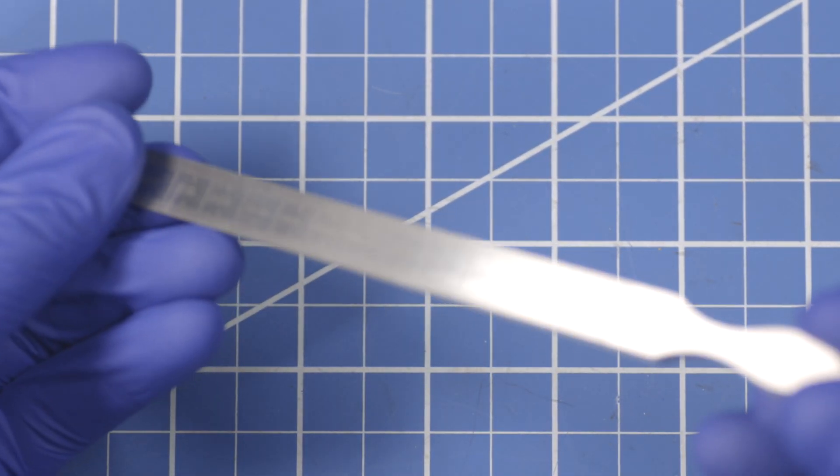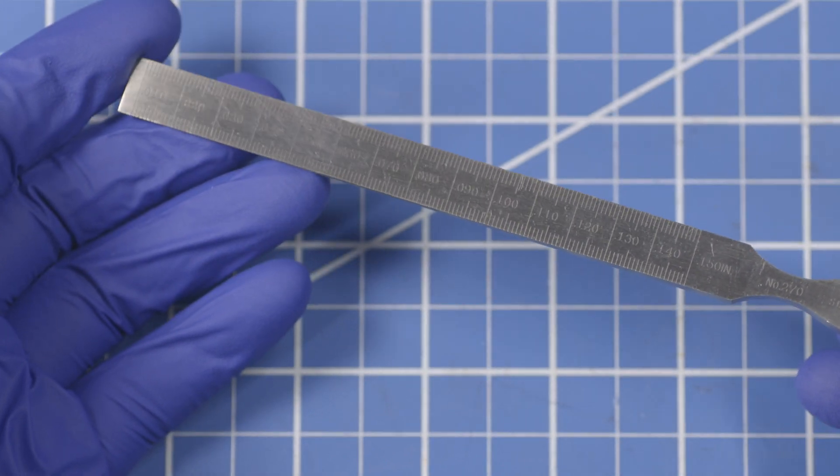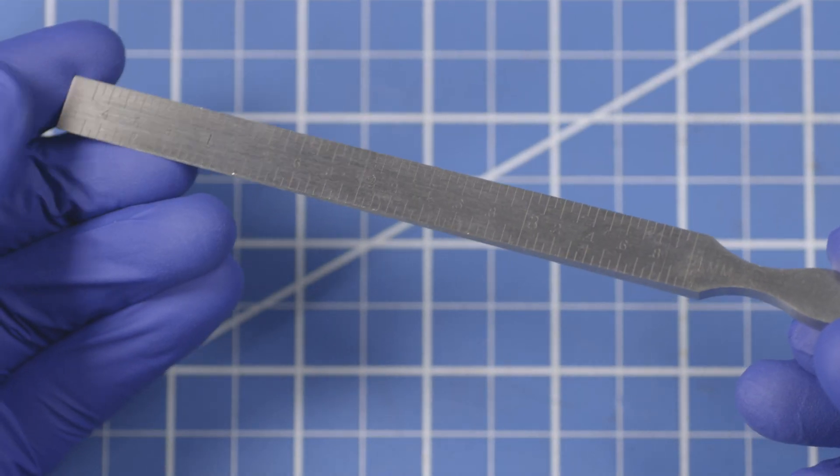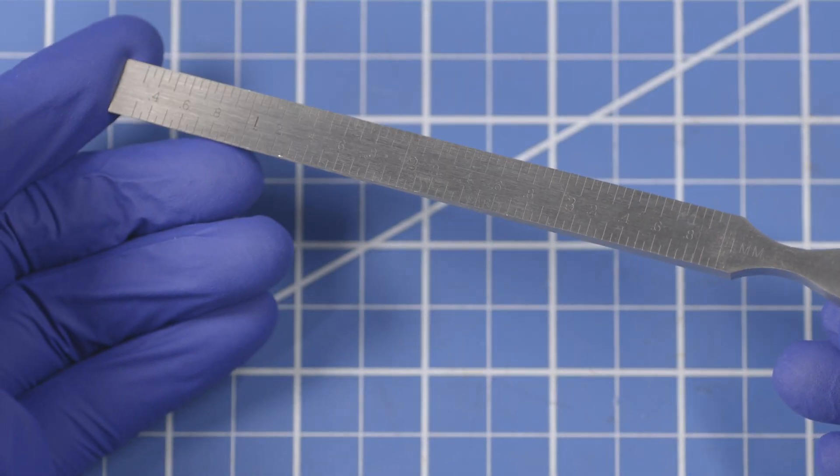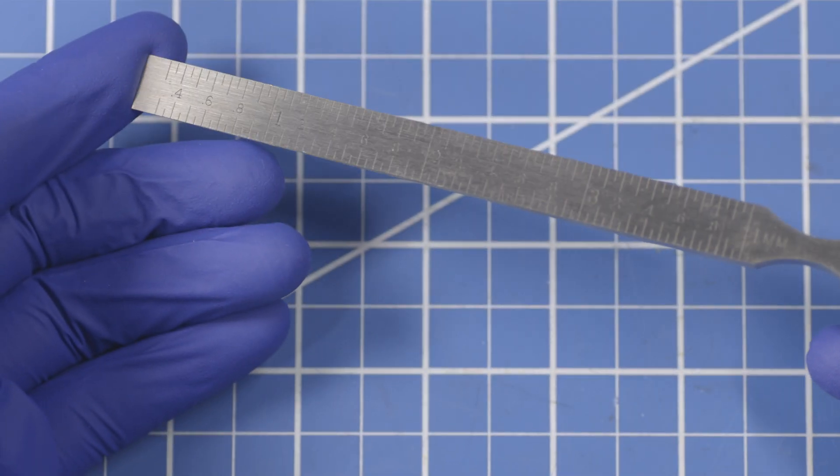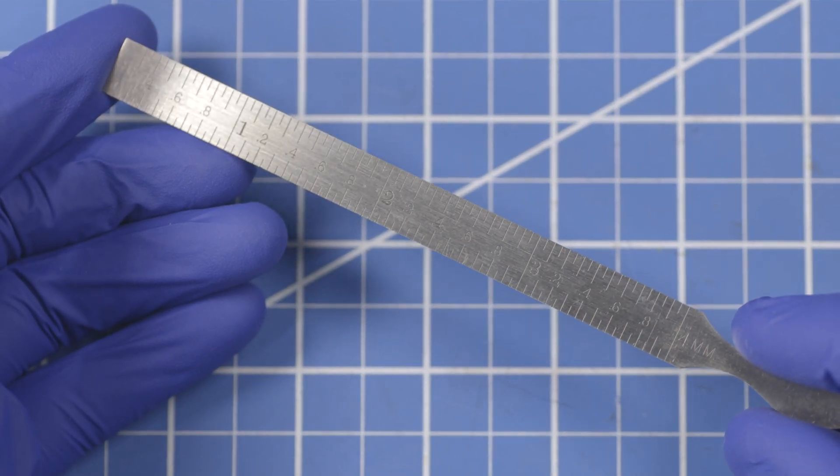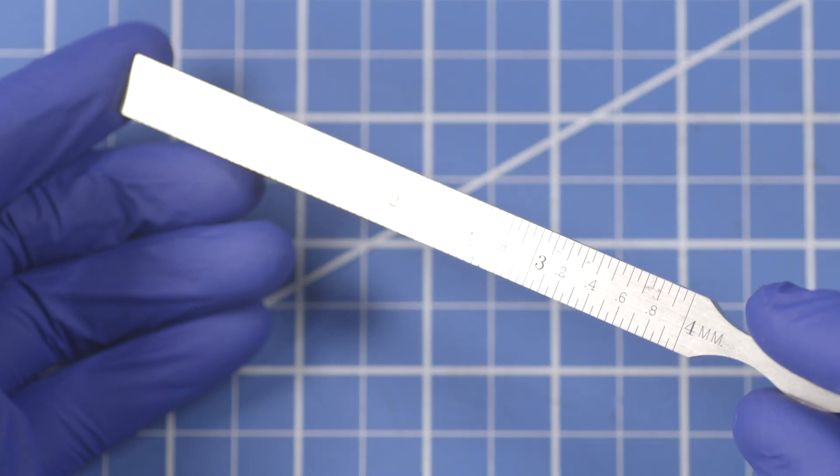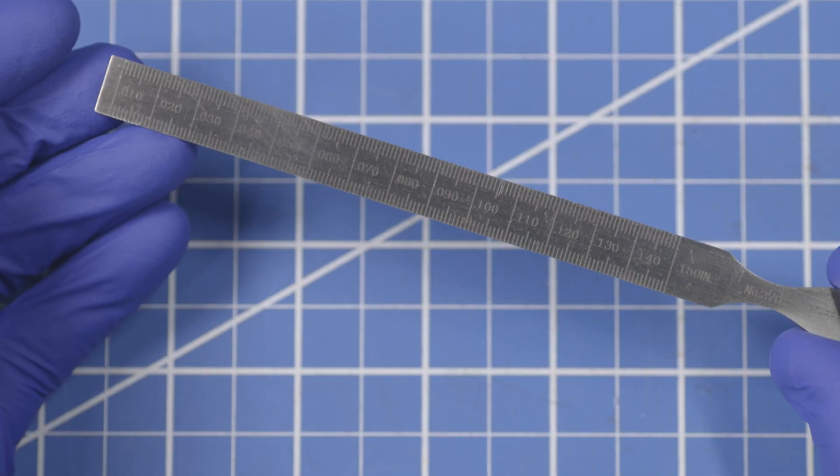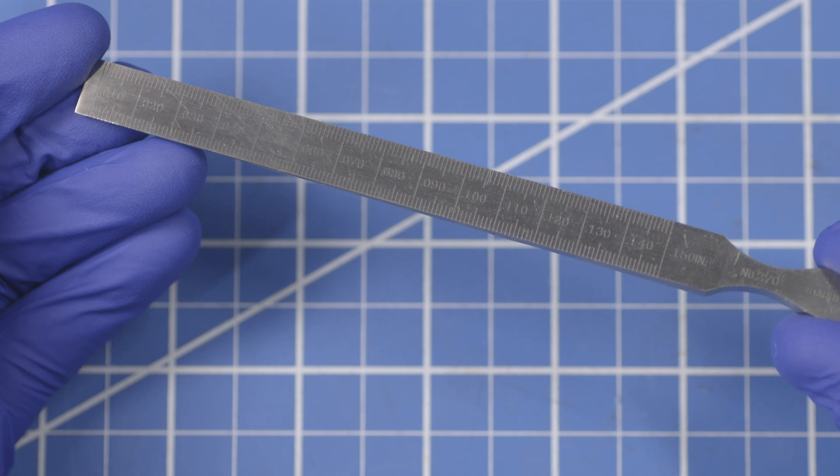As you can see, it's engraved with markings from 10 thousandths to 150 thousandths on this side. And this side goes from zero to four millimeters. Now something to be careful of, at a glance this side kind of looks like an inches ruler, but it's not. It's the millimeters side. And this side looks more metric-y to me, but it's not. It's the thousandths of an inch side.